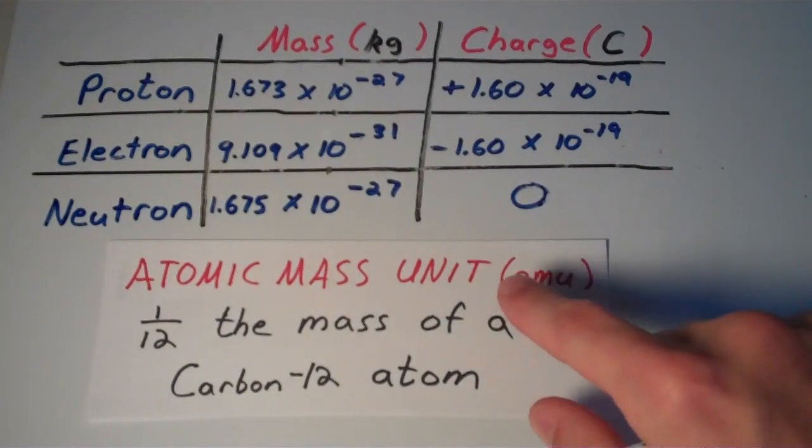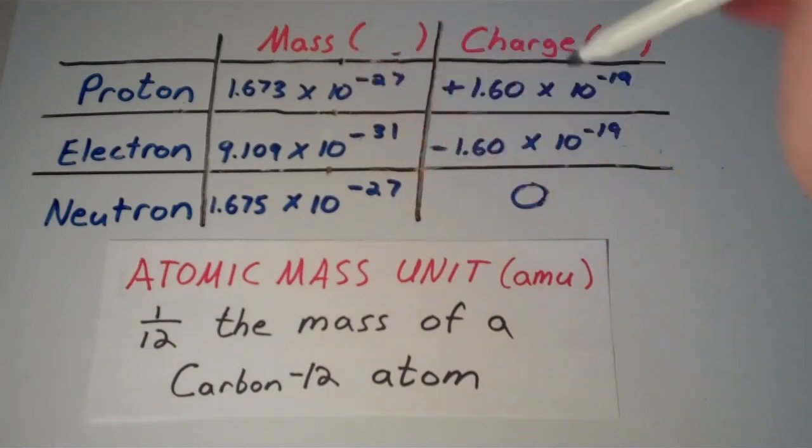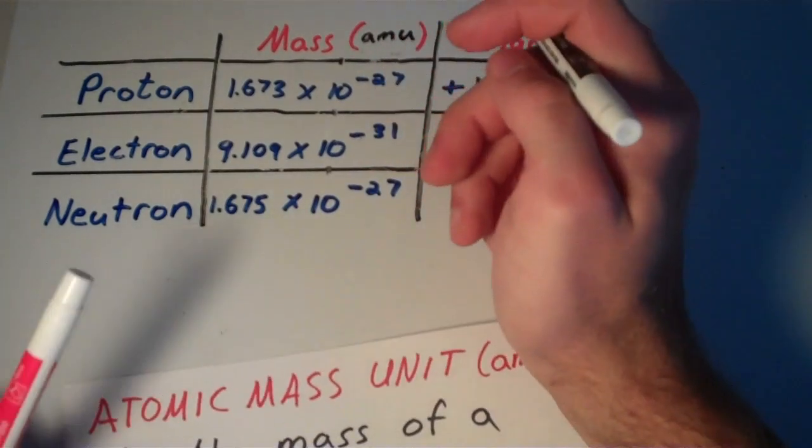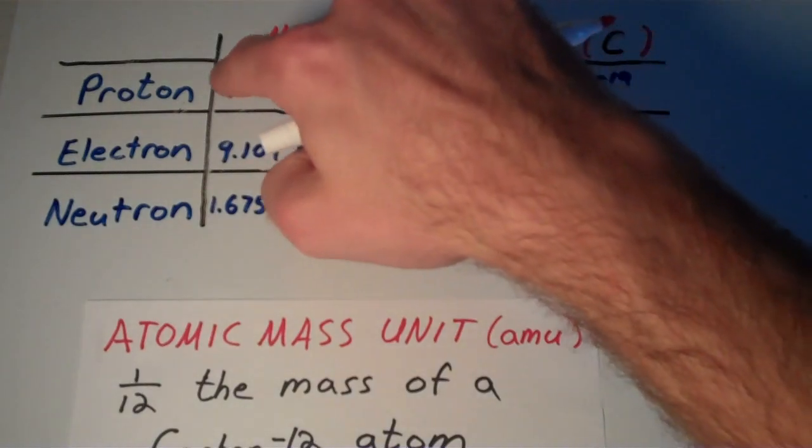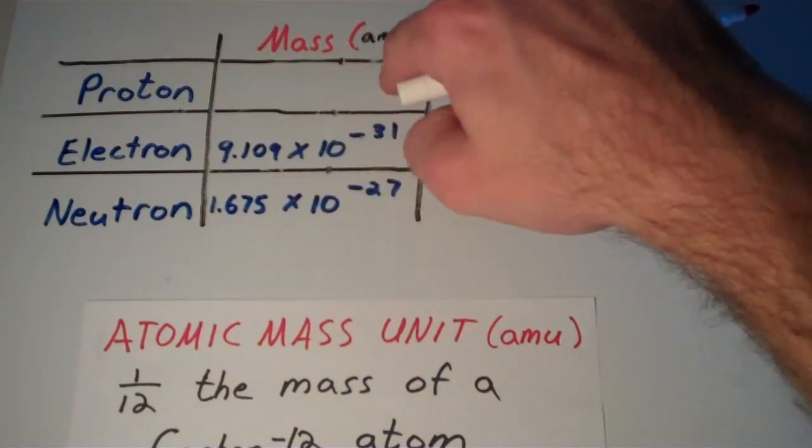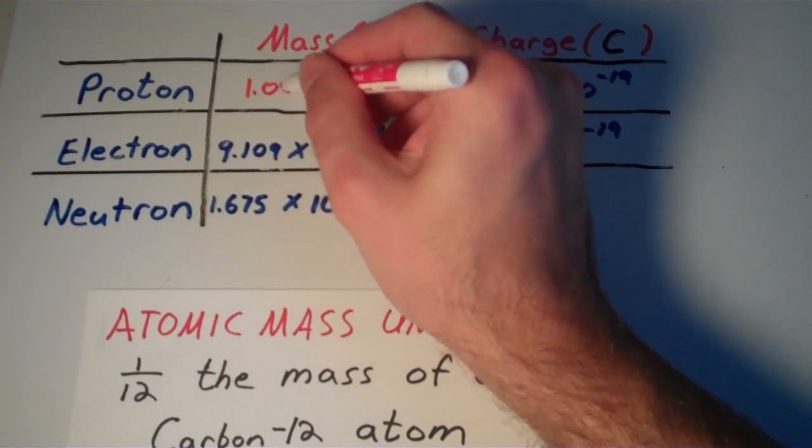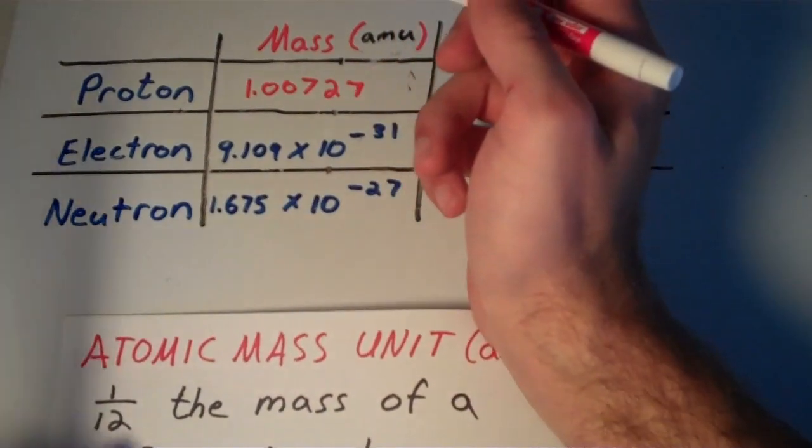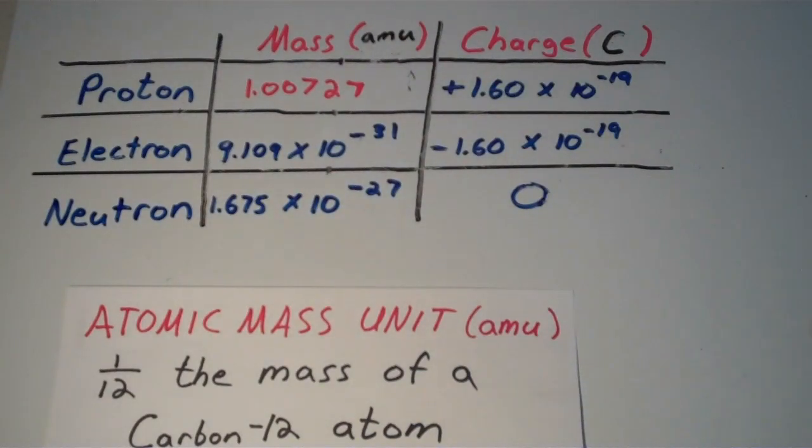So now, let's fill out this portion of the table, this mass column. But instead of kilograms, let's express these masses in terms of atomic mass units. If we express the mass of a proton in AMU, we'll get that the proton is about 1.00727. I think that's the exact mass of a proton, or at least it's the mass of a proton carried out to 5 decimal places. So the mass of a proton is 1.00727 AMU.